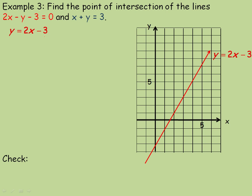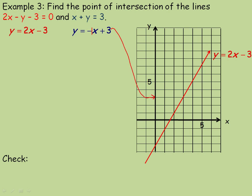Now we're going to graph x plus y equals 3. Solving for y, I rearrange and bring the x over — the sign changes to negative x on the right side. So y equals negative x plus 3. I write it as negative x plus 3 because that's in y equals mx plus b form. The slope is negative 1 and the y-intercept is at 3. So this graph starts at 3, and with a slope of negative 1 over 1, we go down 1 and right 1. The negative 1 on top is the rise, so it goes down 1, and the positive denominator means we go right 1. We do that for 3 or 4 points and draw the line.